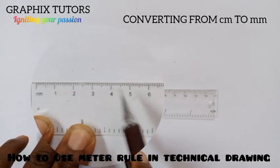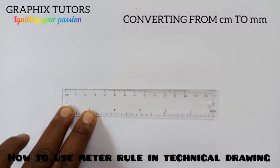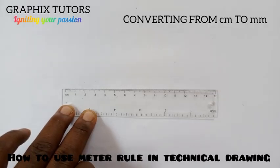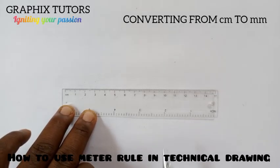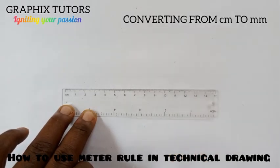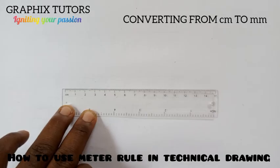So if you are given to convert nine centimeters into millimeters, you don't have to stress yourself, just multiply it by 10. So nine centimeters multiplied by 10 will be 90 millimeters. So this is how you convert from millimeter to centimeter or from centimeter to millimeter.